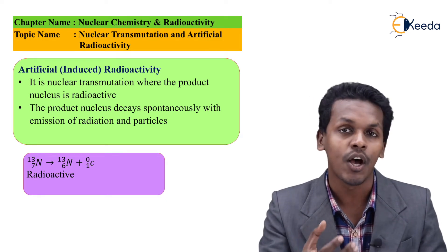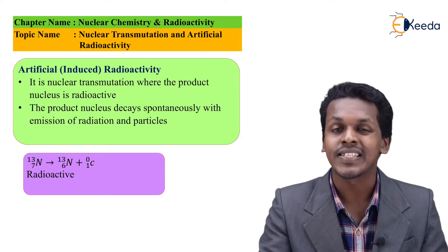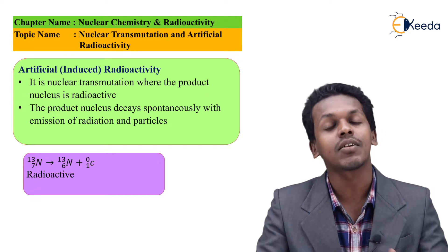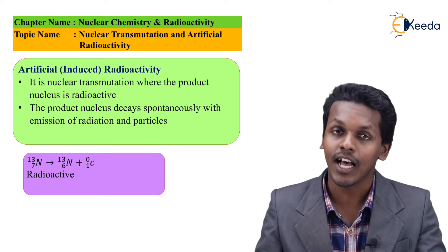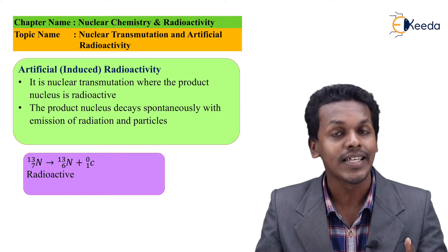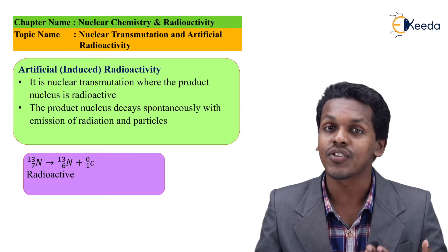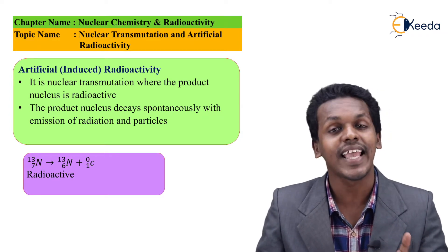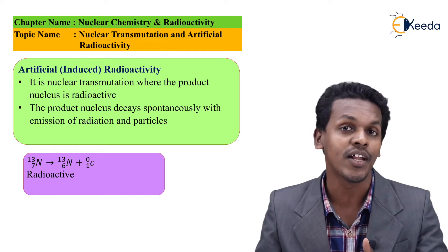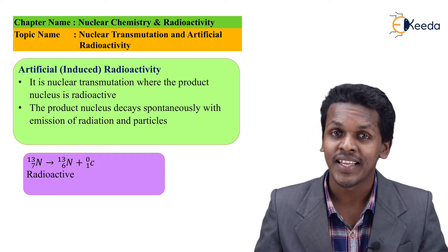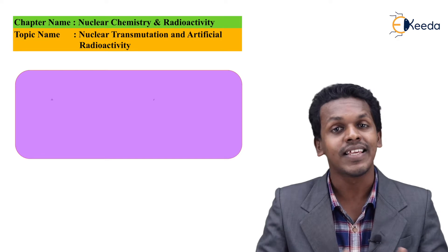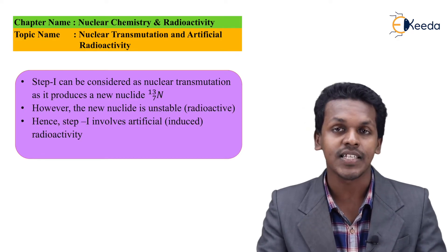the same nitrogen can be transformed into another nuclide - carbon with atomic number 6 and atomic mass 13 - by the removal of a positron. This is the second step I discussed.